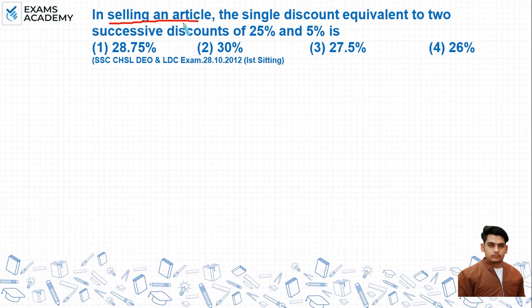The question is: In selling an article, the single discount equivalent to two successive discounts of 25% and 5% is how much? So the question gives us successive discounts of 25% and 5%, and we need to find the single equivalent discount.